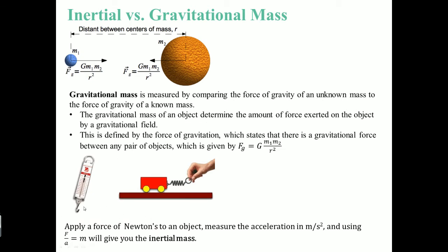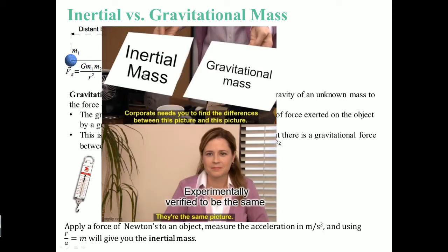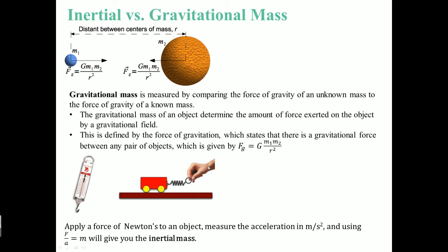The inertial mass, on the other hand, is when we do it on earth. And let's say we're pulling an object with a spring, and we can calculate its force. We know its acceleration. Therefore, we can get its mass. The mass here is called the inertial mass. We apply F equals ma. So if Corporate Needs You to find a difference between these two pictures, which is inertial mass and gravitational mass, they're actually the same picture. You can verify this experimentally, and we have already.